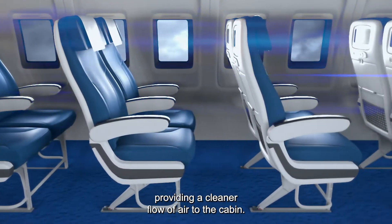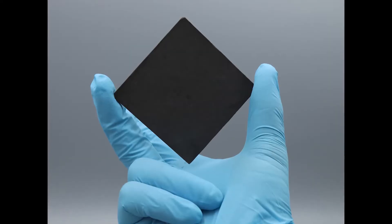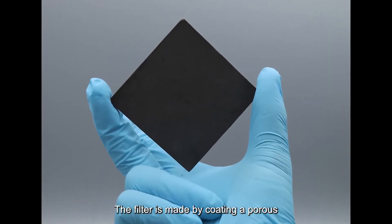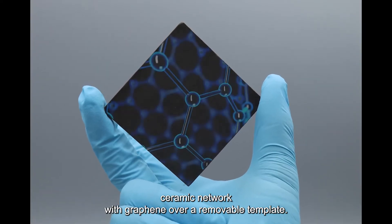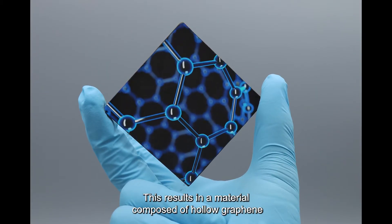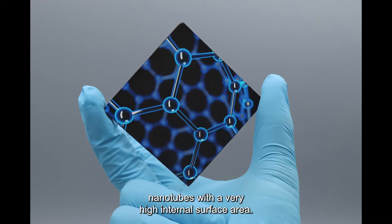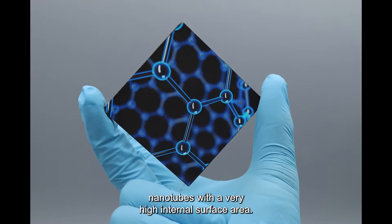The filter is made by coating a porous ceramic network with graphene over a removable template. This results in a material composed of hollow graphene nanotubes with a very high internal surface area.